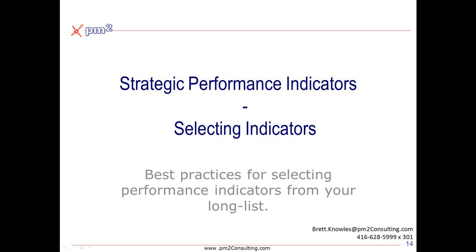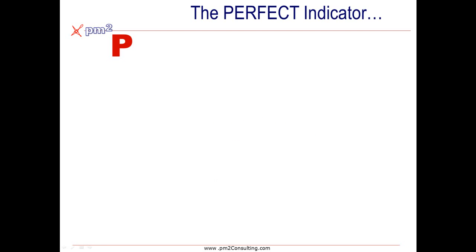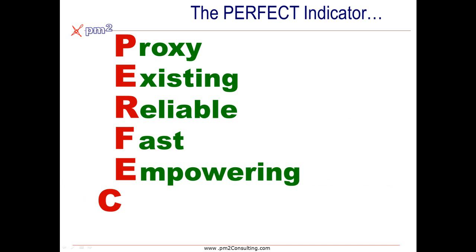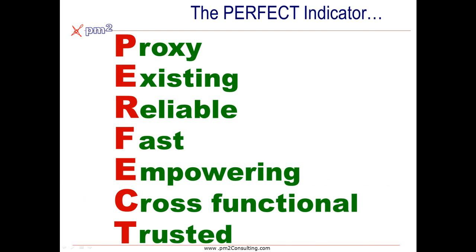We've modified the framework to be PERFECT — we're looking for the perfect performance indicator. Let's take a look at each of the elements. First, a proxy: we would like to test the potential indicators to see whether they're a proxy for the overall performance. Are they indicative of what's happening? A great example might be that employee satisfaction is a concern, but we could use an indicator like absenteeism as a proxy.